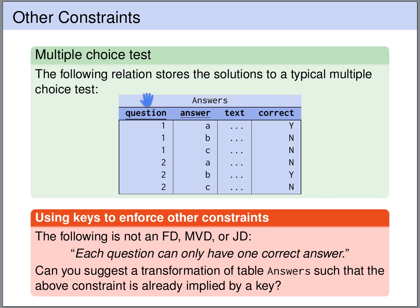In this table we have the question number 1, 2, 3 and so on, the letter of the answer A, B, C and so on. Every answer has a text and we have a classification whether the answer is correct or not. The question and the answer together form a key for this table, so for every question we cannot have the same answer letter twice.